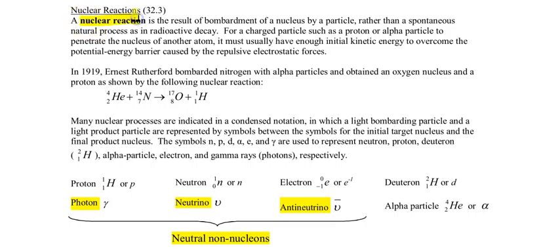A nuclear reaction is a result of a nuclei being bombarded by a particle. And that particle can be an alpha particle, a proton, a neutron, a deuteron, all sorts of things, or even another nuclei.